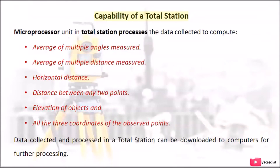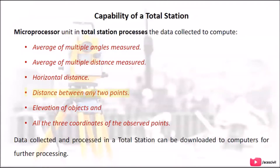Capability of a Total Station: The microprocessor unit in Total Station processes the data collected to compute the average of multiple angles measured, average of multiple distances measured, horizontal distance, distance between any two points, elevation of objects, and all three coordinates of the observed points.